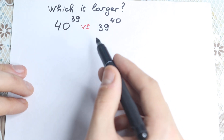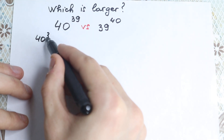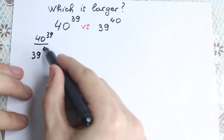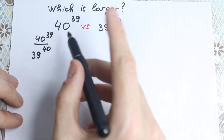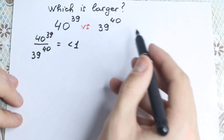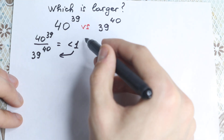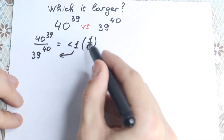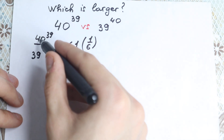So let me suggest a really interesting approach. If we divide 40 to the power 39 by 39 to the power 40 — that is, write it as a fraction — we can expect two cases. The first case is when the answer is less than 1. If the answer is less than 1, then our denominator will be greater. For example, if we have 1 over 6, then 6 is greater than 1, so 39 to the power 40 would be greater.